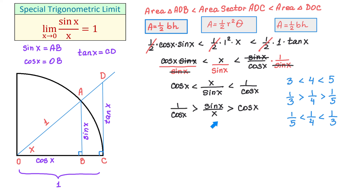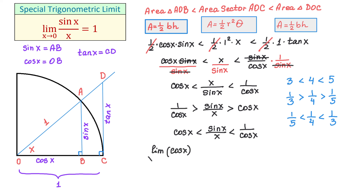Completing this step in our inequality: we write cosine(x) on the left, flip the inequality symbol, sine(x) over x in the middle, flip the other inequality symbol, and 1 over cosine(x) on the right. In the next step we take the limit of each expression as x approaches 0: the limit of cosine(x), the limit of sine(x) over x, and the limit of 1 over cosine(x), all as x approaches 0.